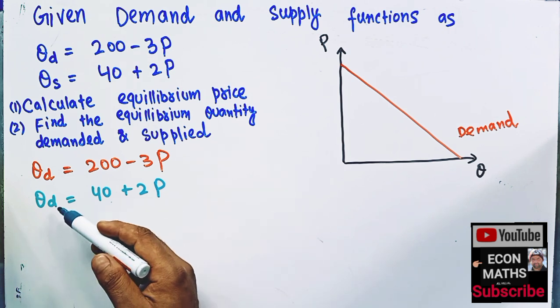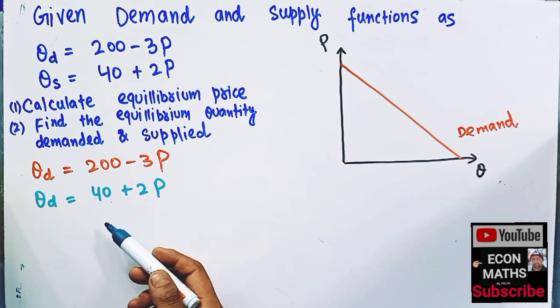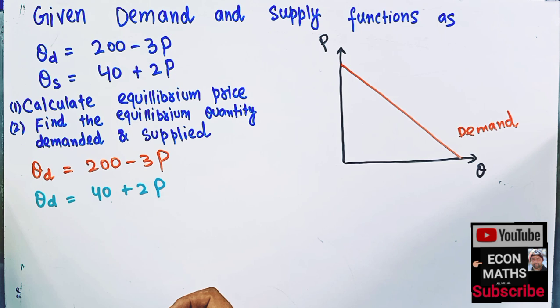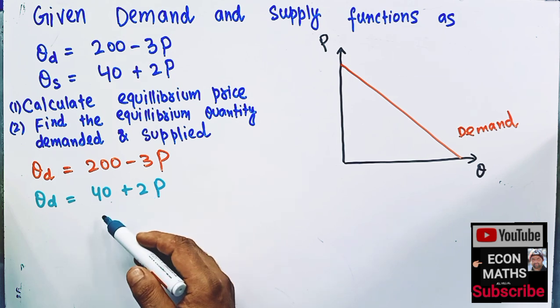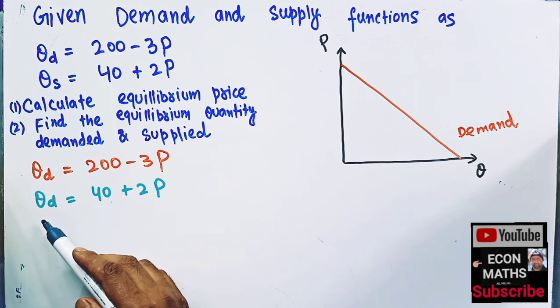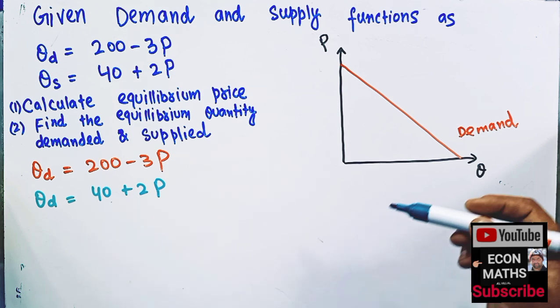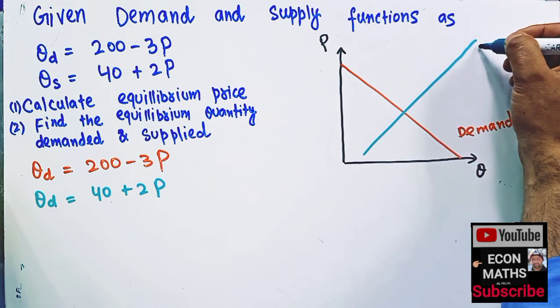Also, we have a positive sloping supply curve. And here you can see, when price is equal to zero, quantity demanded is equal to 40. Or when Q is equal to zero, P is equal to... So it will look like this if I draw it in this fashion. So this is our supply function.